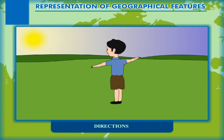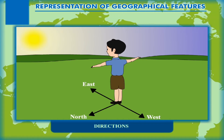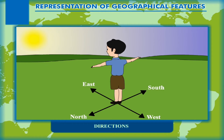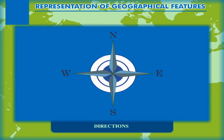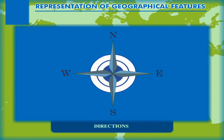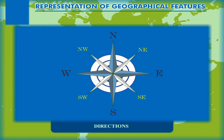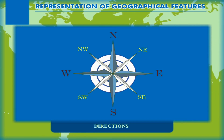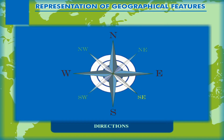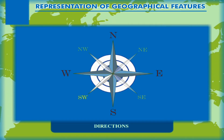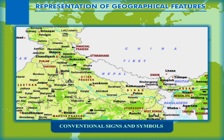On the land, when we face the rising sun we face the east; the west lies behind us, the left hand shows north, and south lies towards our right. The four main directions are referred to as the cardinal directions. Along with these four main directions, there are four intermediate directions lying between them: northeast (between north and east), southeast (between south and east), southwest (between south and west), and northwest (between north and west).